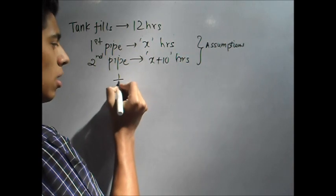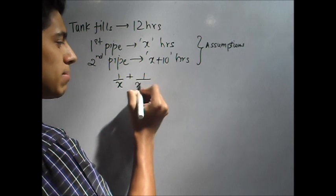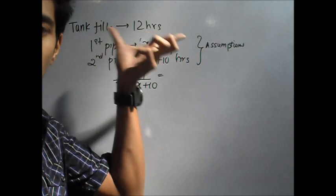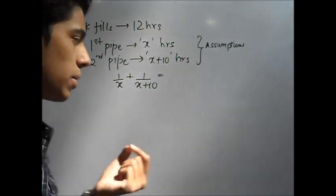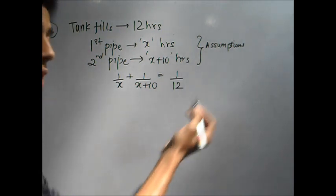Now let's write the equation. First pipe fills it in x hours, so every hour 1 over x. Similarly, second pipe, 1 over x plus 10. Is equal to, since the tank fills it in 12 hours, every hour 1 over 12 gets filled. Now solve this equation.